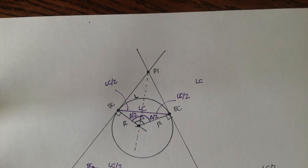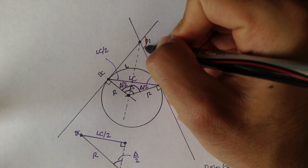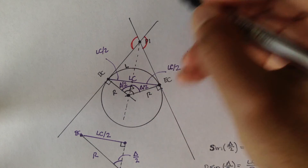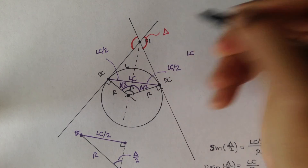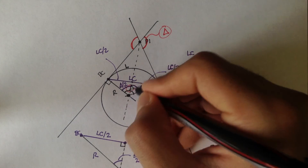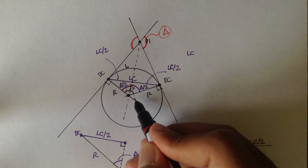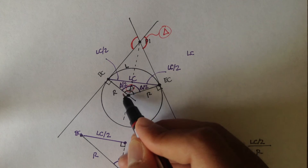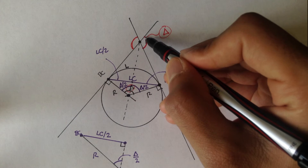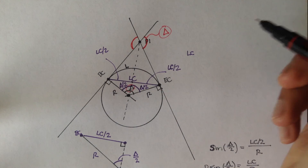There's one more thing on this diagram to point out. This angle at the center of the circle — where the two radius lines intersect — is actually also delta. It's the same as the angle the two tangent lines make at PI. So where the two radii meet, the interior angle they make equals delta.